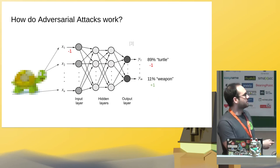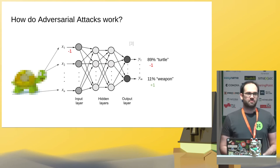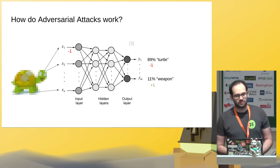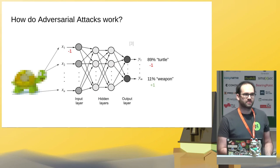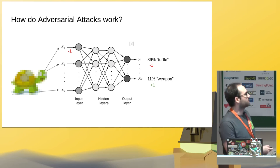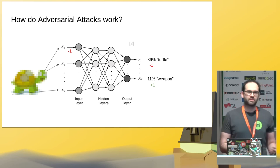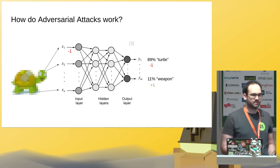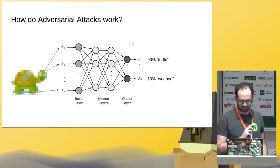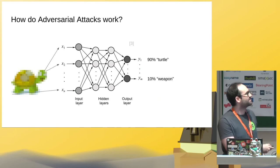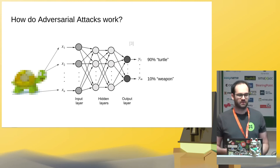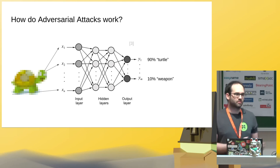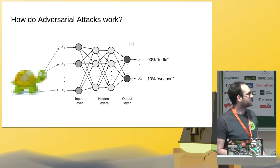Each pixel gets into an input neuron, and then some mathematical operations are performed on it. You don't need to know exactly what's going on inside the network. It's just important that for the output of the network we get a probability distribution over what the network thinks it's looking at. In this case, we have a 90% chance that this thing is a turtle, and a 10% chance that this is a weapon. Usually we assign more labels than that, but for our example let's keep it that way.